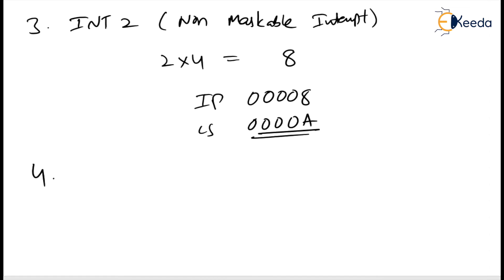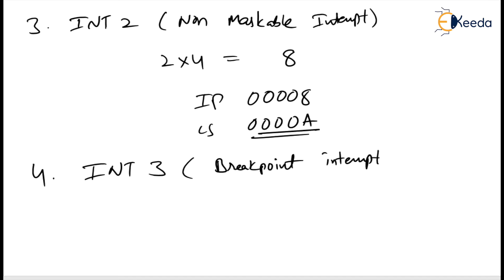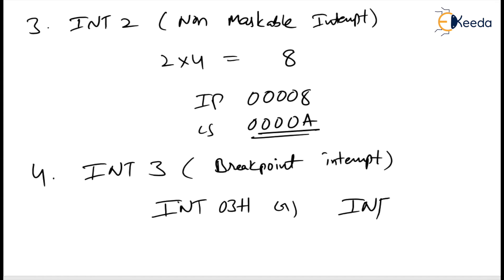INT3 is called the breakpoint interrupt. This interrupt is used to cause breakpoints in the program. It is caused by the instruction INT 03H. It is useful in debugging large programs whenever single stepping is not efficient. The ISR value is type 3 multiplied by 4 equals 12, which is 0000CH in the interrupt vector table.